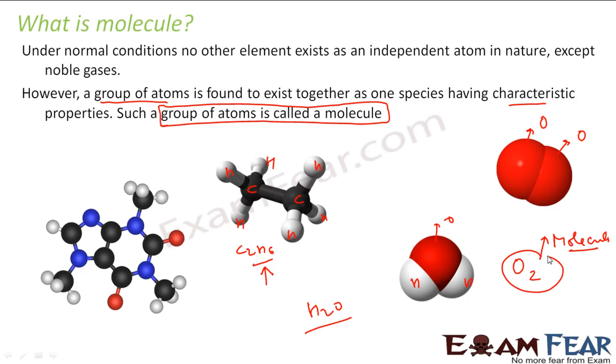So in normal conditions, elements don't exist as individual atoms. They exist as groups of atoms, and a group of atoms is called a molecule.